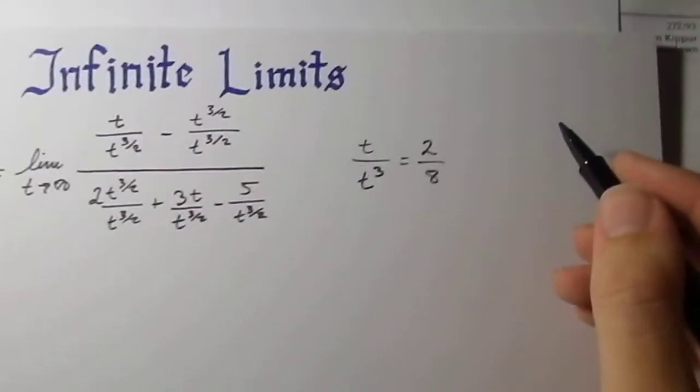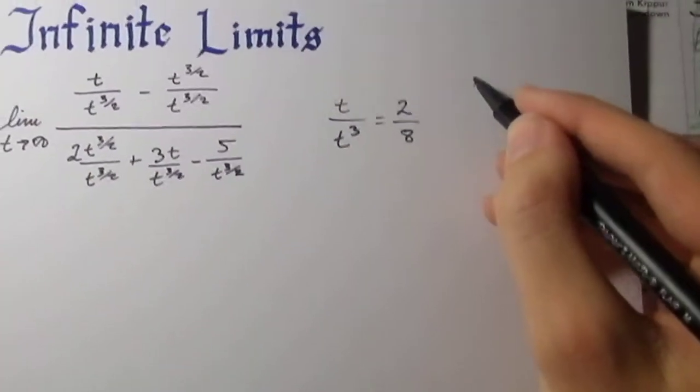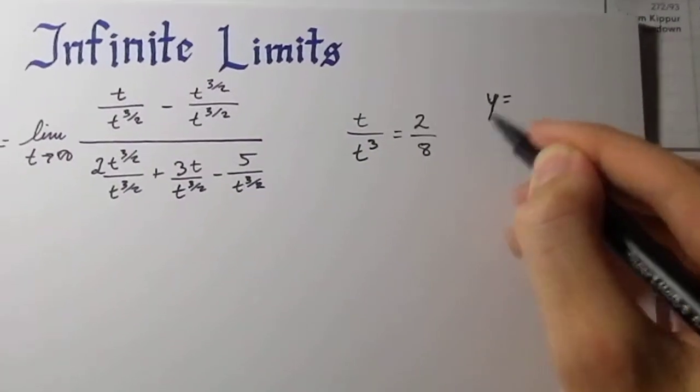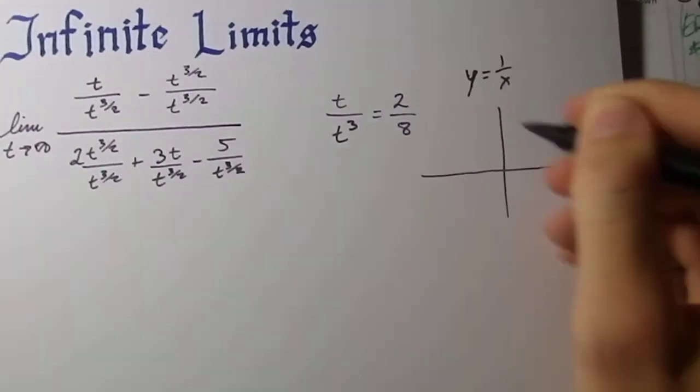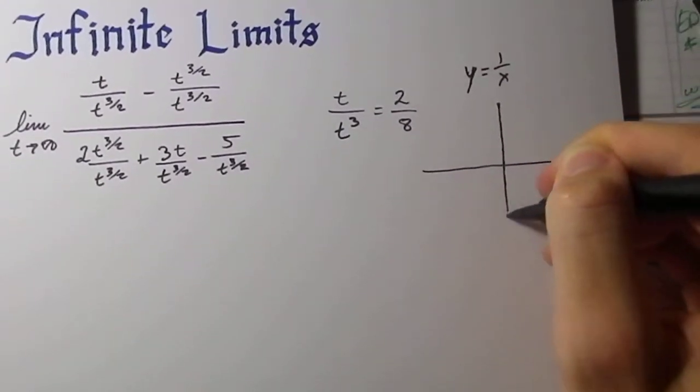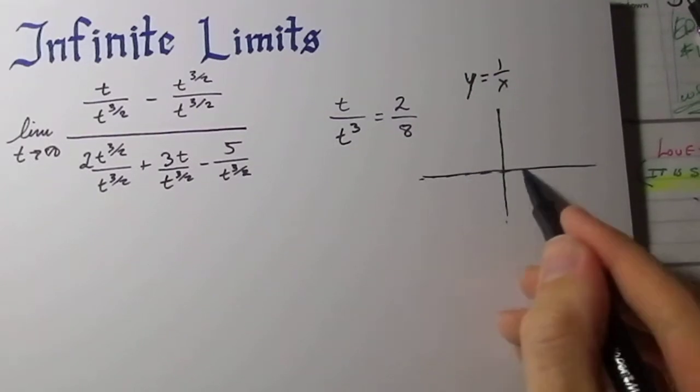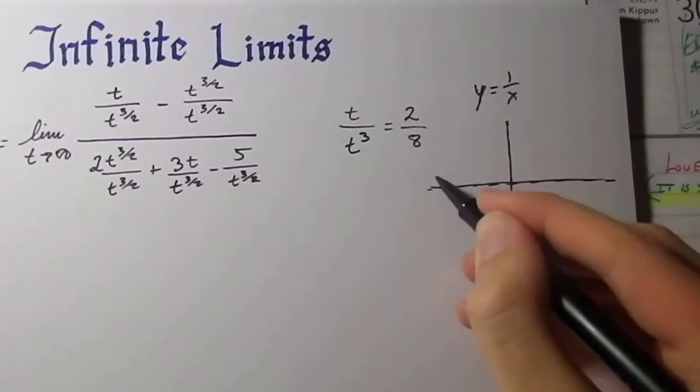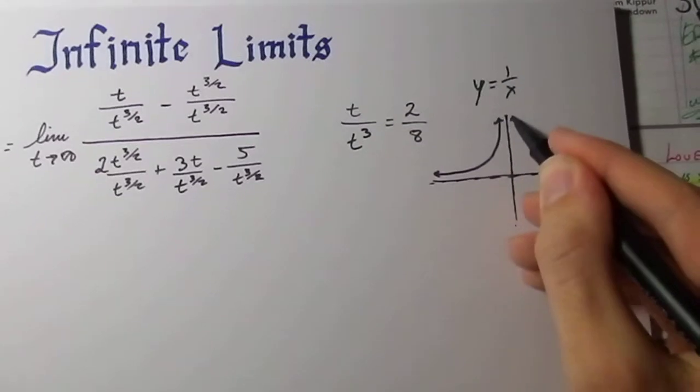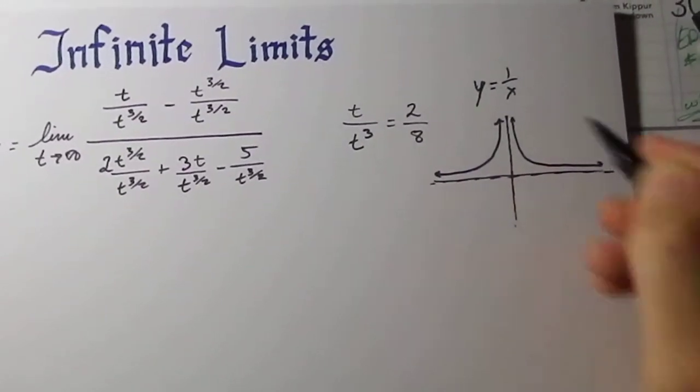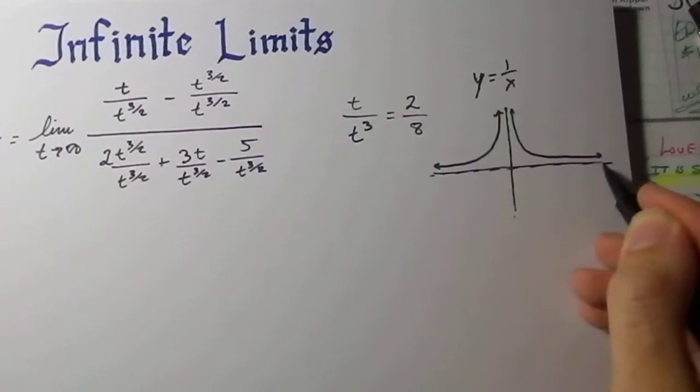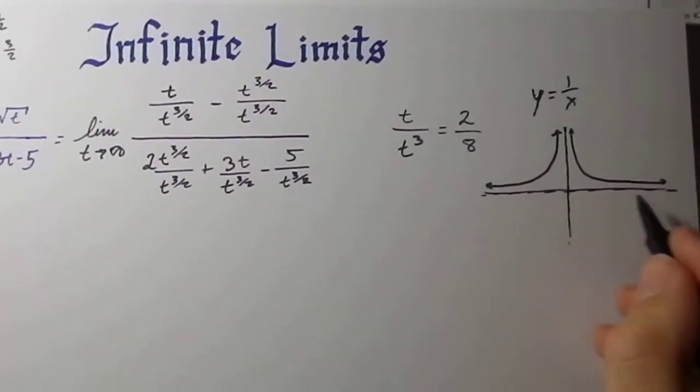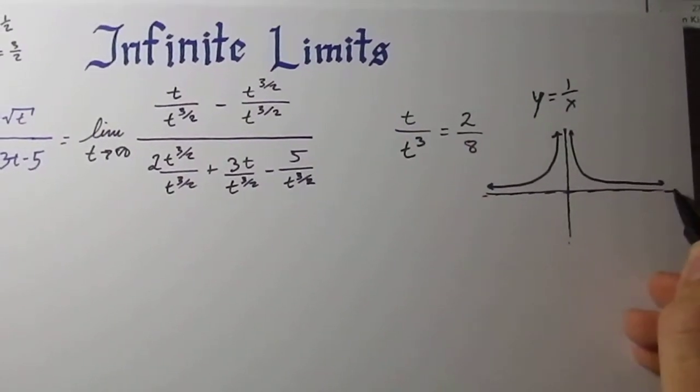My professor did this on the board as an example. y equals 1 over x. What does that graph look like? Well, there's a vertical asymptote here and a horizontal asymptote here. This graph looks like this. And as you notice, the limit of 1 over x as x approaches infinity, positive infinity right here to positive infinity, the closer and closer the graph or the function is approaching 0.